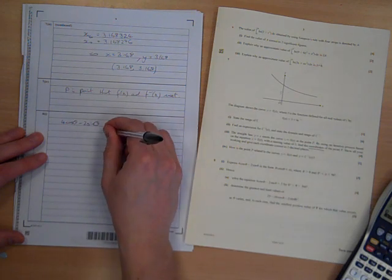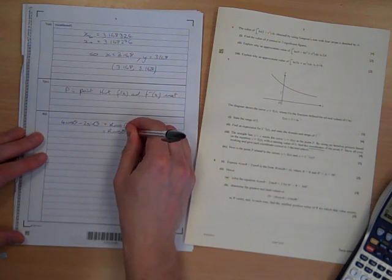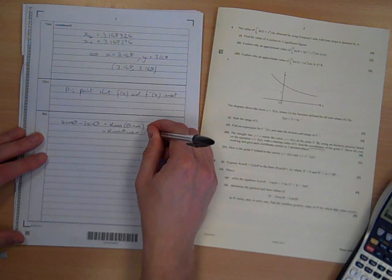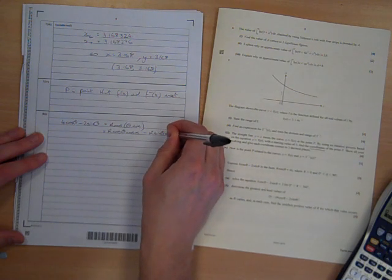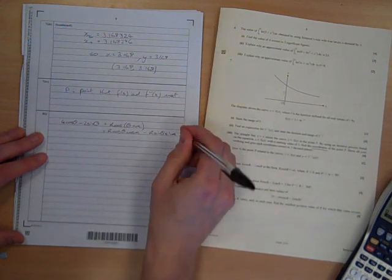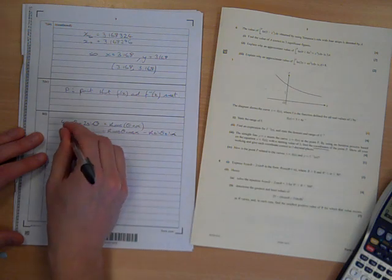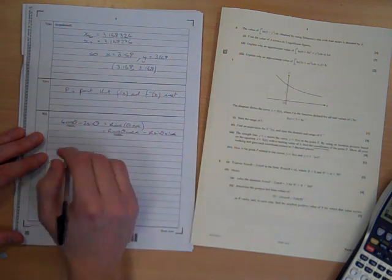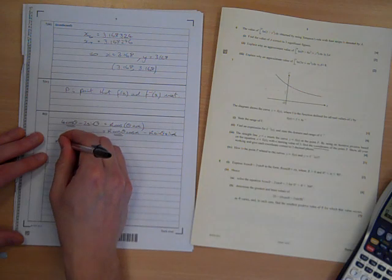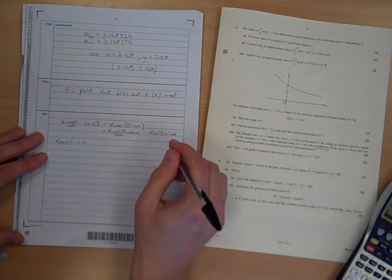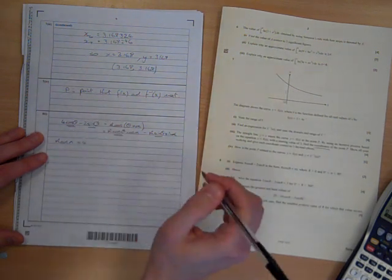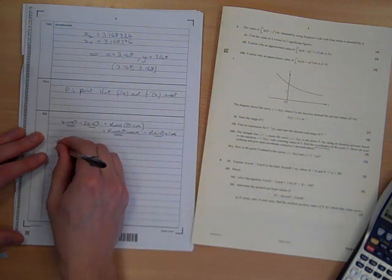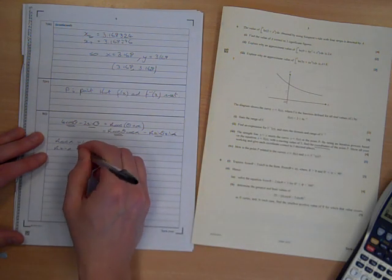From the formula booklet, this is r cos theta cos alpha minus r sin theta sin alpha. So we compare coefficients. We've got cos theta there and there, so we're saying that r cos alpha must be 4. We've got sin theta there and there, so we're saying that r sin alpha must be equal to 2.